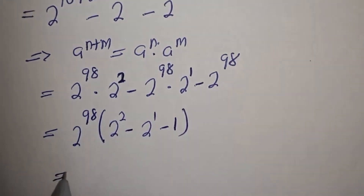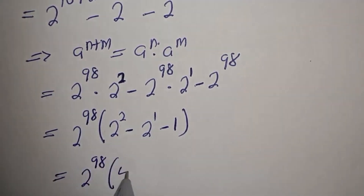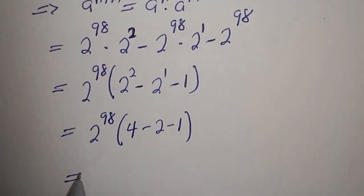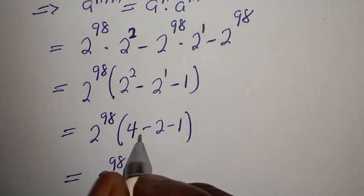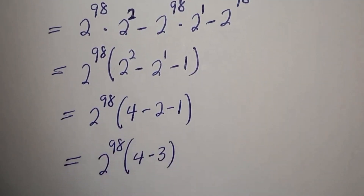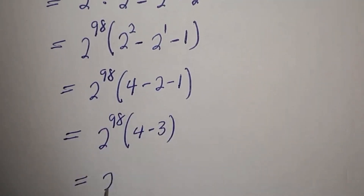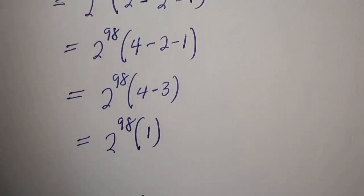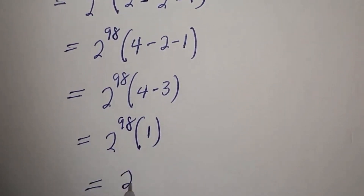So here is 2 raised to power 98, bracket 2 squared is 4, minus 2, minus 1. It is equal to 2 raised to power 98 bracket 4 minus 3, equal to 2 raised to power 98 bracket 1. And this is equal to 2 raised to power 98. And this is the final answer.